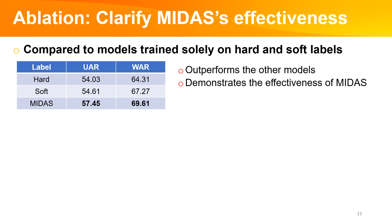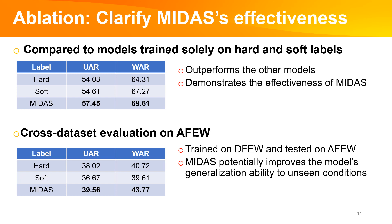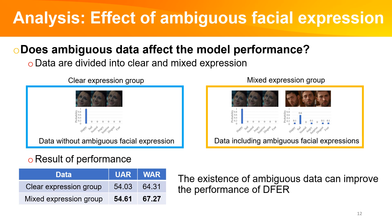To highlight MIDAS's effectiveness, we conducted two key experiments. In the first, we compared a model trained with MIDAS against models trained exclusively on hard or soft labels. The results, as shown in the table, demonstrate that our method surpassed others, underlining MIDAS's effectiveness. For the second experiment, we performed a cross-dataset evaluation using the AFEW dataset. We trained models on DFEW and then tested them on AFEW. Here, MIDAS showed superior performance in both UAR and WAR, outperforming models trained only on hard or soft labels. This suggests that MIDAS potentially improves the model's generalization ability to unseen conditions.